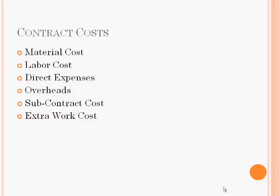What are the main contract costs? First is material cost, which is used for construction. Second is labor cost, which we have to give in the form of wages. Third is direct expenses. Fourth is overheads — in overheads we can include depreciation and any other cost which is not a direct expense.